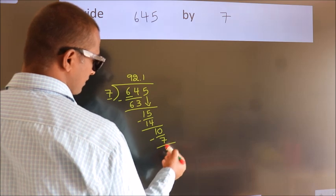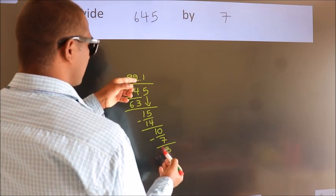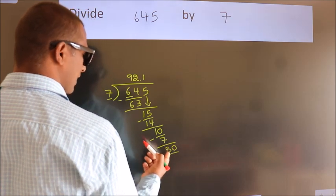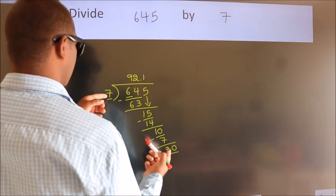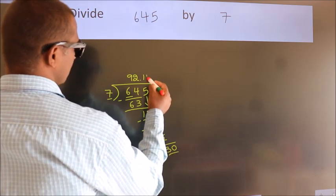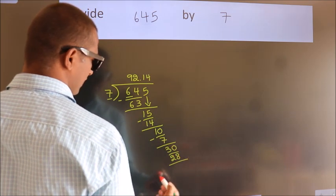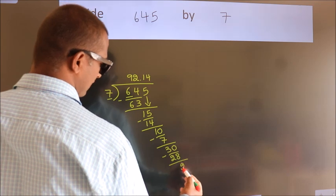After this, we already have the decimal, so directly take 0, making 30. A number close to 30 in the 7 table is 7 fours, 28. Now we subtract and get 2.